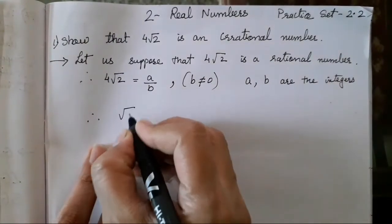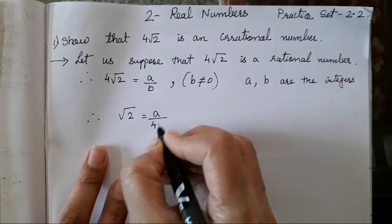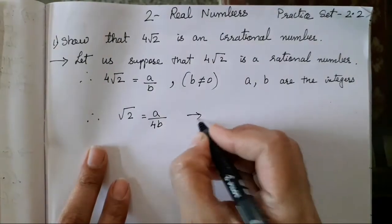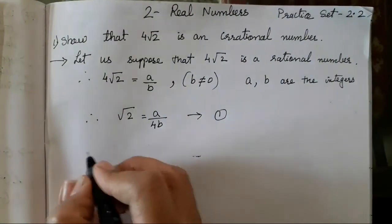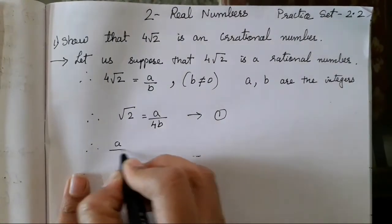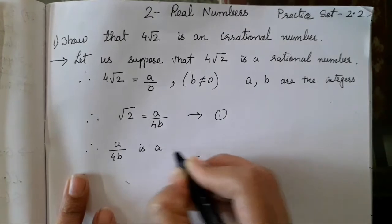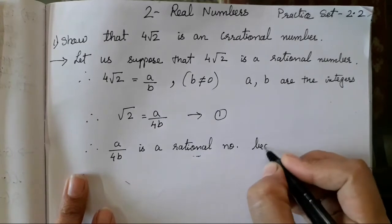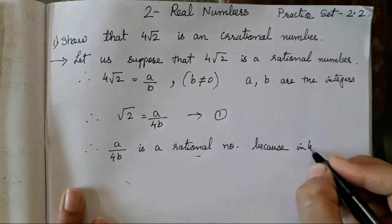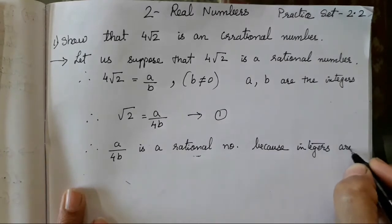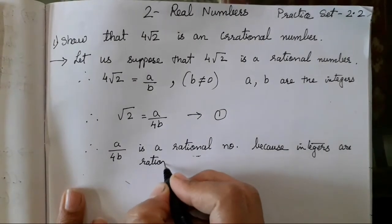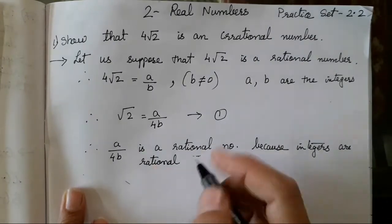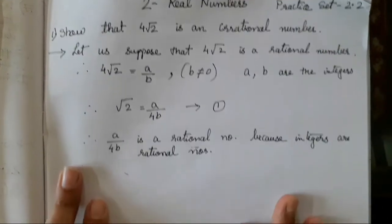Therefore, root 2 is equal to A upon 4B — this 4 changes its place. So it will be A upon 4B. Let's keep this as the first equation. Therefore, A upon 4B is a rational number because integers are rational numbers.